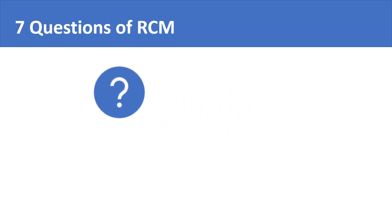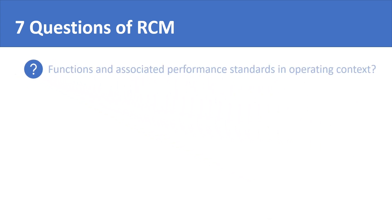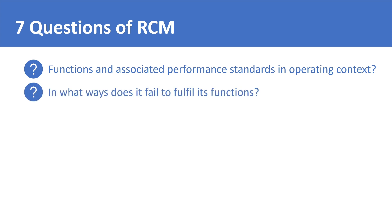The seven questions are: what are the functions and associated performance standards of the asset in its present operating context? In what ways does it fail to fulfill its functions? What causes each functional failure?